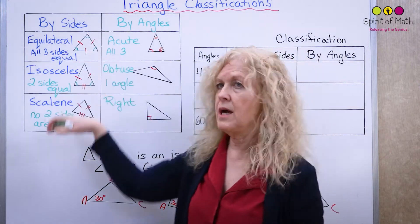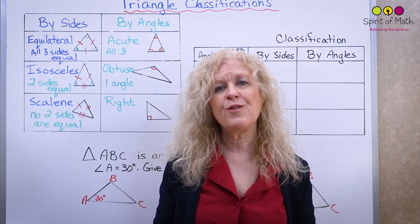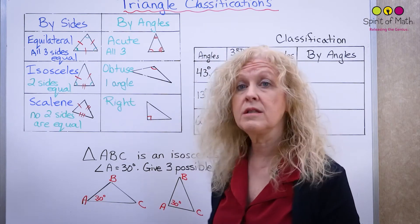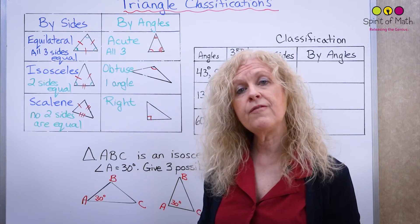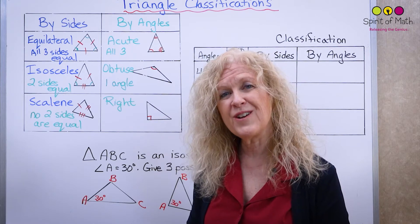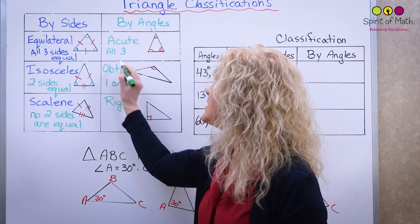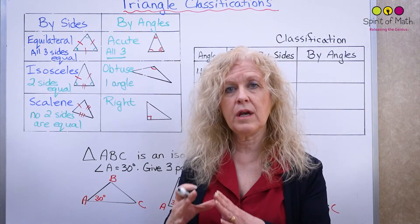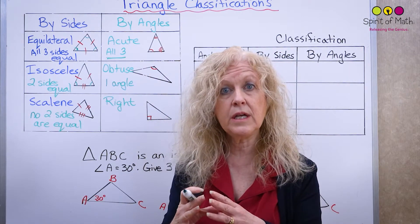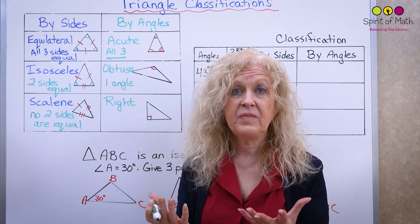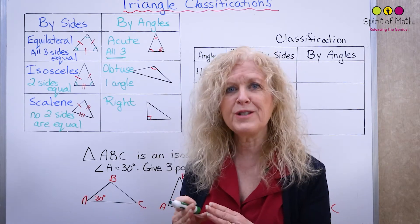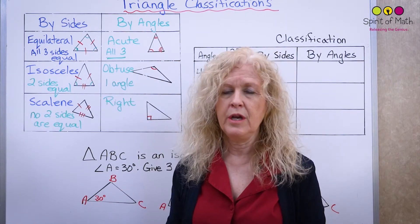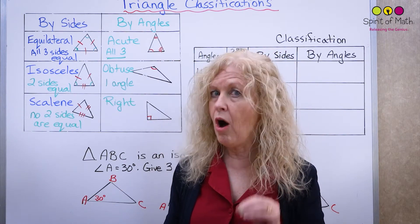So that's classification by sides. You can also classify triangles by their angles. The first type is an acute triangle, where all three angles are acute — less than 90 degrees. All three have to be acute, not just one or two.